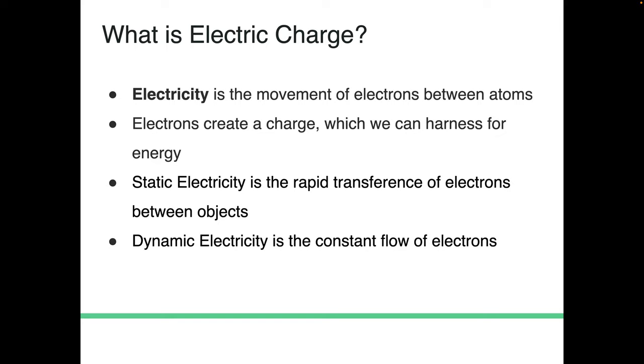It is a rapid transference of electrons between objects. Now, this is the best example. Static electricity can, is lightning. Lightning is static electricity. Static electricity is coming from a hugely disproportionate difference in voltage levels between the cloud layer and the ground. We're talking about hundreds of thousands of volts, millions of volts, and it causes this rapid, rapid transference of electricity, right?